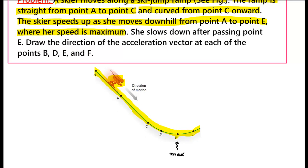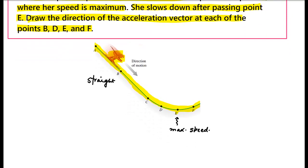So at point E she has maximum speed, and after passing point E her speed decreases — she slows down. The question asks us to draw the direction of the acceleration vector at each of the points B, D, E, and F. So what is given: A to C is a straight path, C to F is a curved path, maximum speed is at E, speed increases from A to E, and decreases after E.